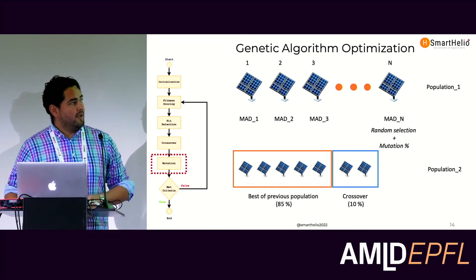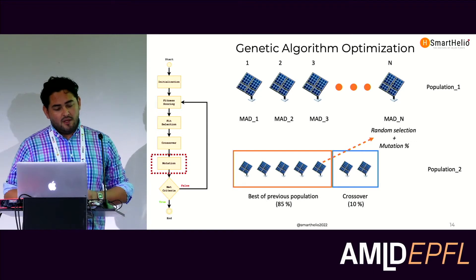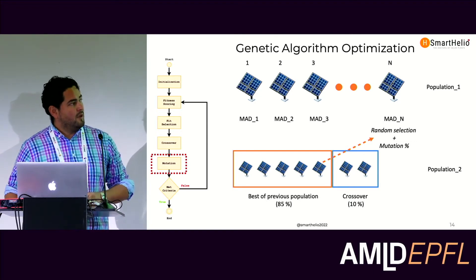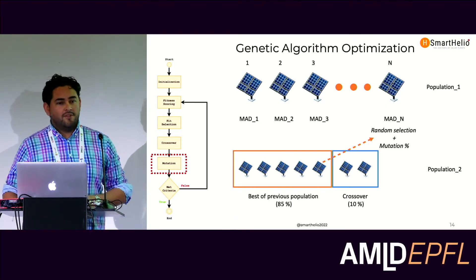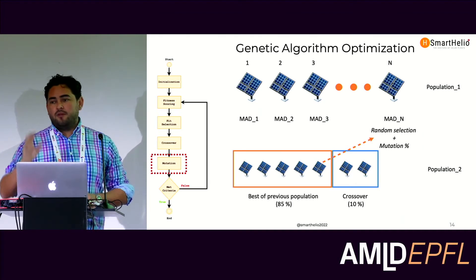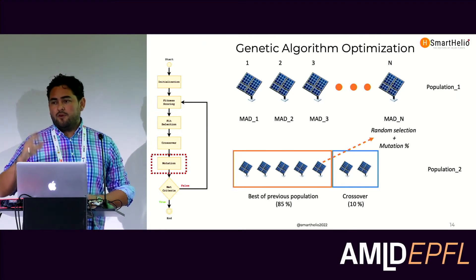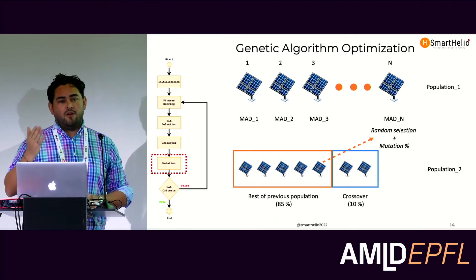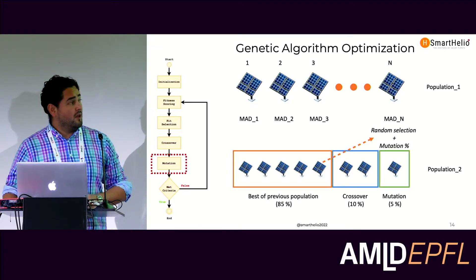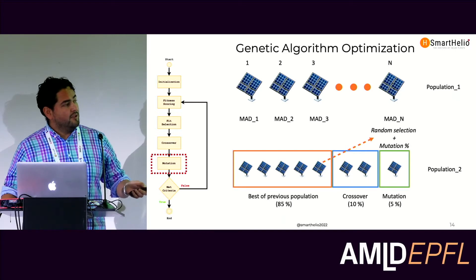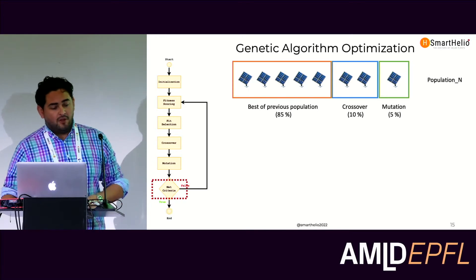The last part is mutation. Mutation can happen only to the best elements of the previous population — though you can define it to happen to any member. You select a random best member of the population and apply a mutation percentage to each of its characteristics — in this case, the six parameters we considered. We set mutation to build just 5% of the new population. We repeat this until we meet the stopping criteria.